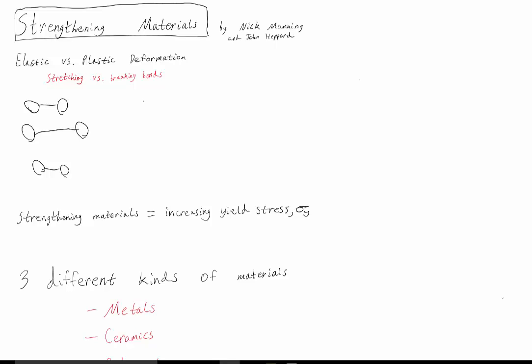On the other hand, plastic deformation occurs when the stress is applied so great that the bonds between them, in simple terms, break. And then when the stress is removed, the atoms don't return to the same position.